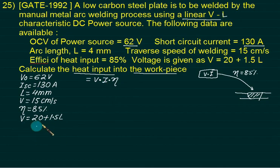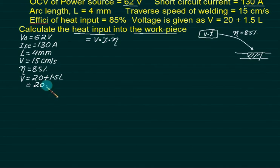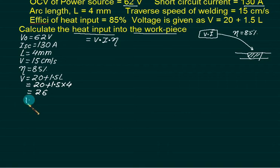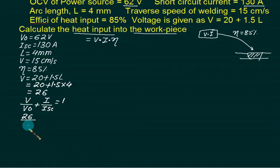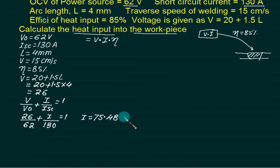We will continue the last equation. This one is 20, this one is 20 plus 1.5 times L. How much is L? 4. So 4 times 1.5 is 6, and 20 plus 6 is 26. The second equation is V/V0 plus I/Isc equals 1. Put V = 26, V0 = 62, short circuit current is 130, right-hand side is 1. I can calculate my current. The answer is 75.48 amps.